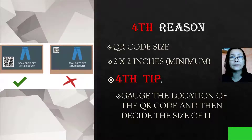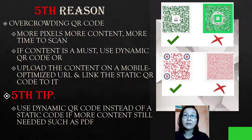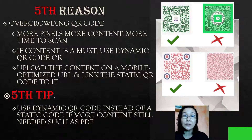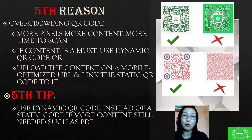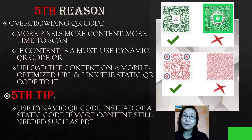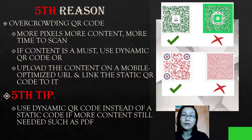The fifth reason is due to the overcrowding of the QR code. That means there are more pieces and more content, which means it will need more time to scan. If a lot of content is necessary, you should use a dynamic QR code, or upload the content to a mobile-optimized URL and link the static QR code to it. The fifth tip is to use a dynamic QR code instead of a static one if more content is needed, such as a PDF.